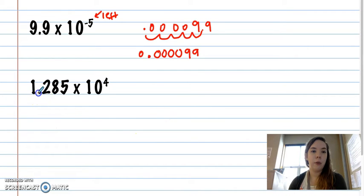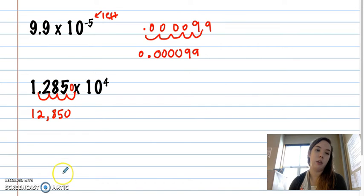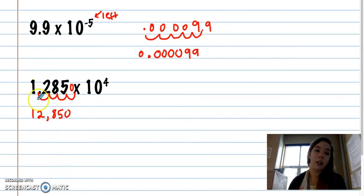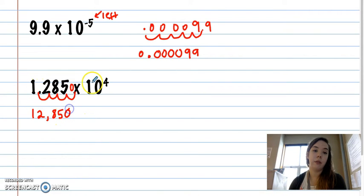Last one here. We're moving 4 to the right since it's positive. So you'd have 12,850. But it was only 1 0 because the first three jumps are the 2, 8, and 5. And again, you have to rewrite this one because this one technically has a decimal and it doesn't in your final answer.